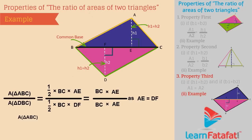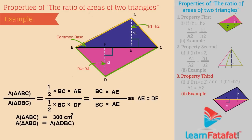For example, if area of triangle ABC is equal to 300 cm², and AE is equal to DF with BC as the common base, then area of triangle ABC is equal to area of triangle DBC. Therefore, area of triangle DBC is equal to 300 cm².